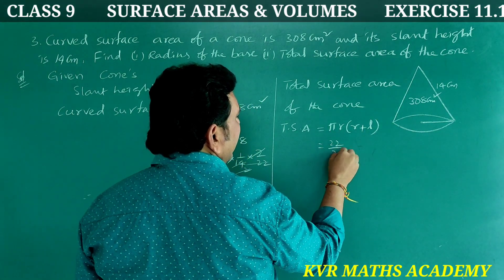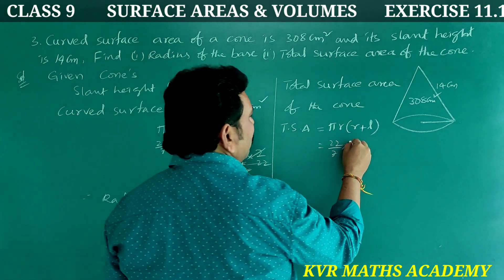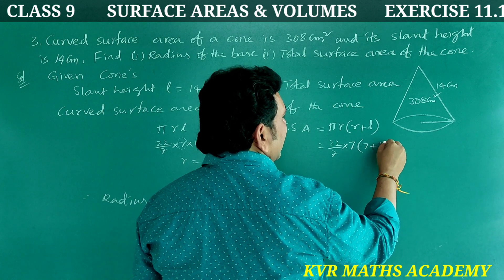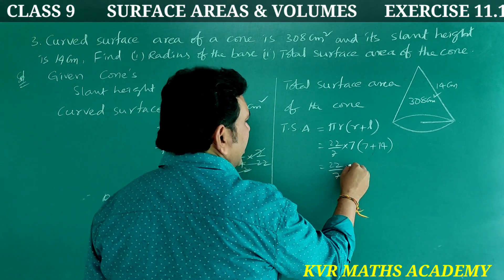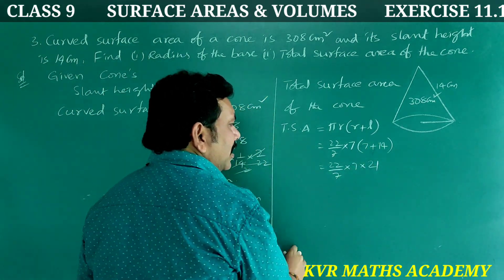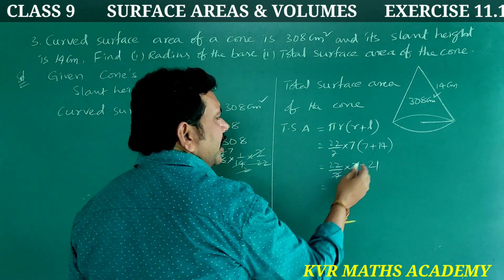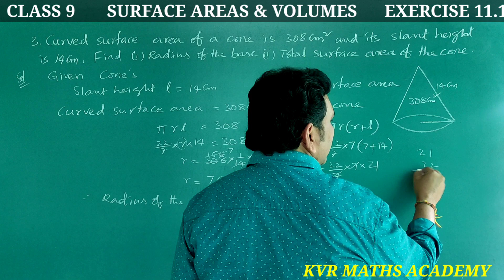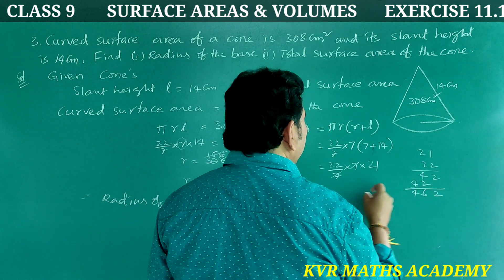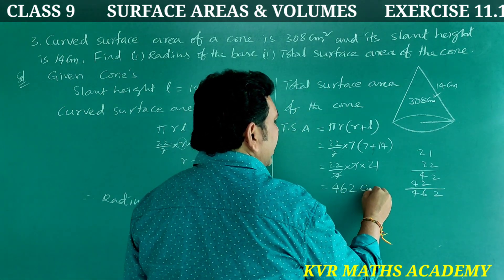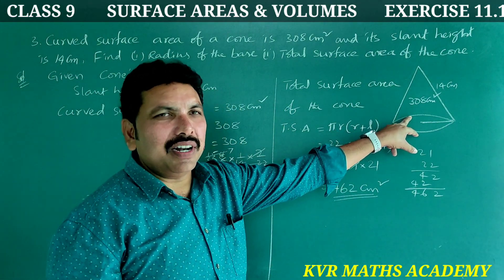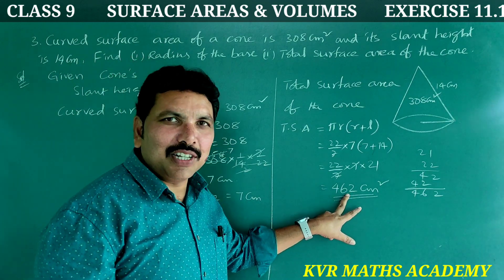The total surface area (TSA) = pi·R·(R + L). That is equal to (22/7) × 7 × (7 + 14) = (22/7) × 7 × 21. The 7s cancel, giving 22 × 21 = 462 cm². Therefore, the total surface area of the cone is 462 cm².